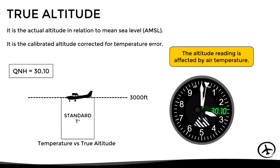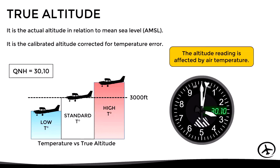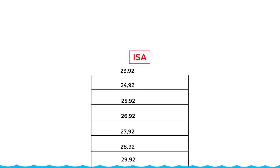However, if the temperature is lower than standard, even using the correct QNH, the true altitude will be lower than the indicated altitude. Conversely, if the temperature is higher than standard, the true altitude will be higher than the indicated altitude. This error occurs due to the pressure distribution with altitude at different temperatures.